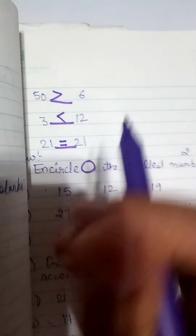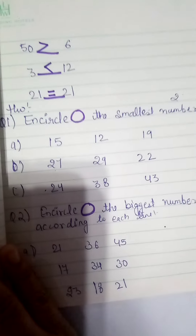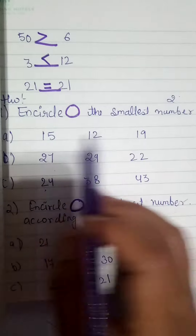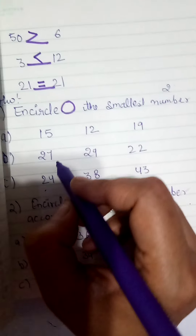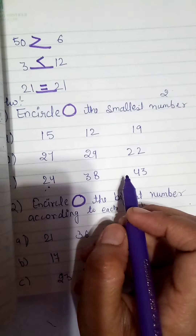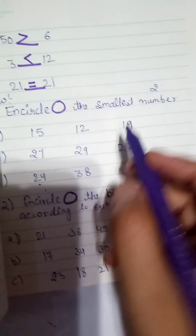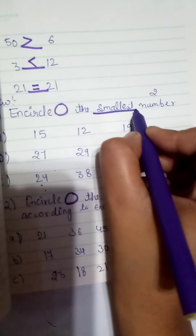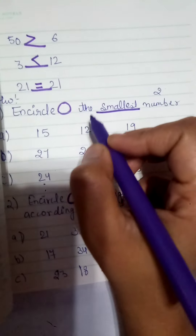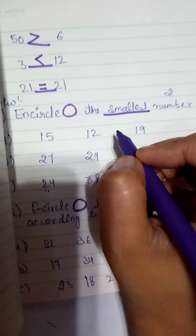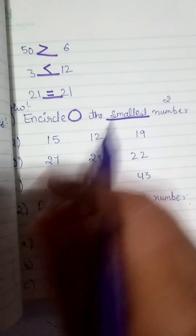So this is how you can do comparing numbers. Students, I have two questions for your homework. Circle the smallest number. First set: fifteen, twelve, and nineteen. Second set: twenty-seven, twenty-nine, twenty-two, twenty-four, thirty-eight, forty-three. You have to find out which one is smallest and circle it. Use color to circle the number.